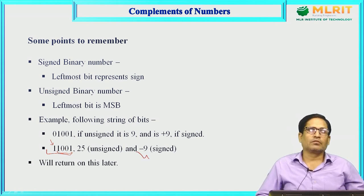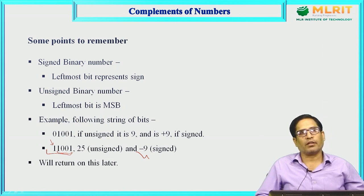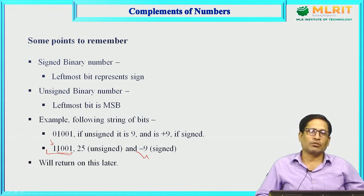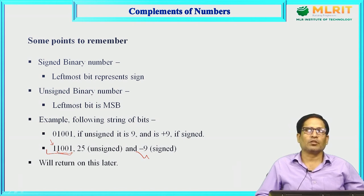In summary, a number can be represented in signed or unsigned binary form. A signed binary variable can represent positive and negative numbers, while an unsigned variable can only represent positive numbers. We will return to this topic when discussing subtraction operations using complement.